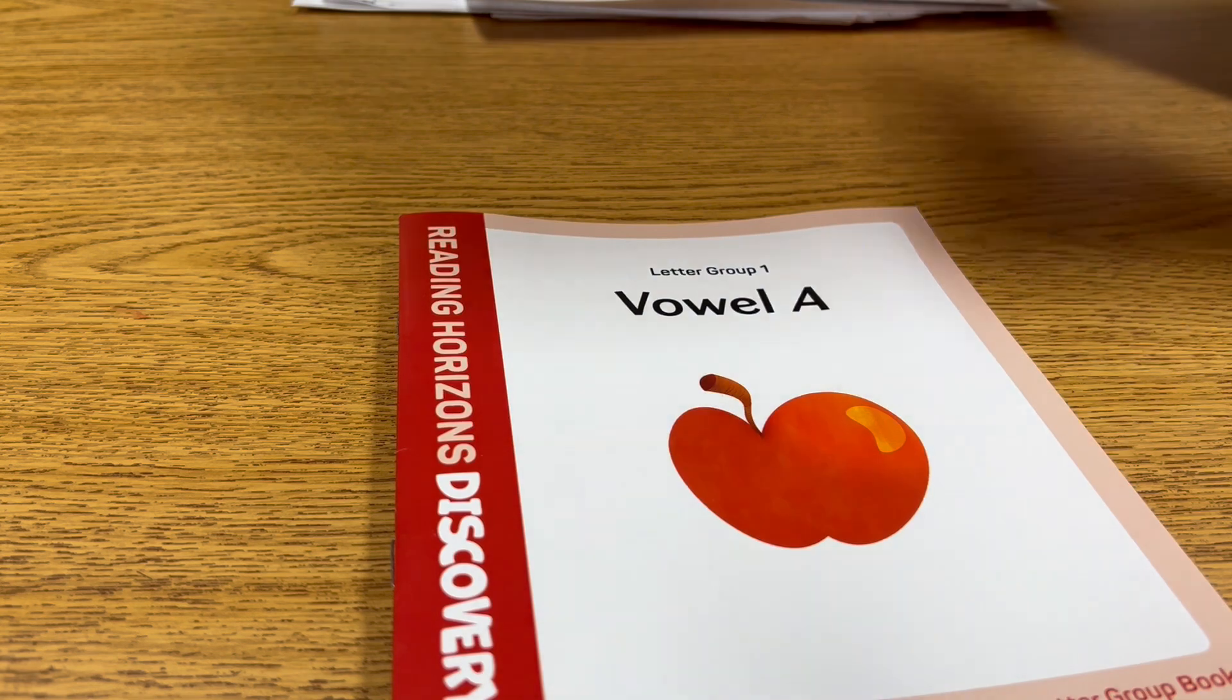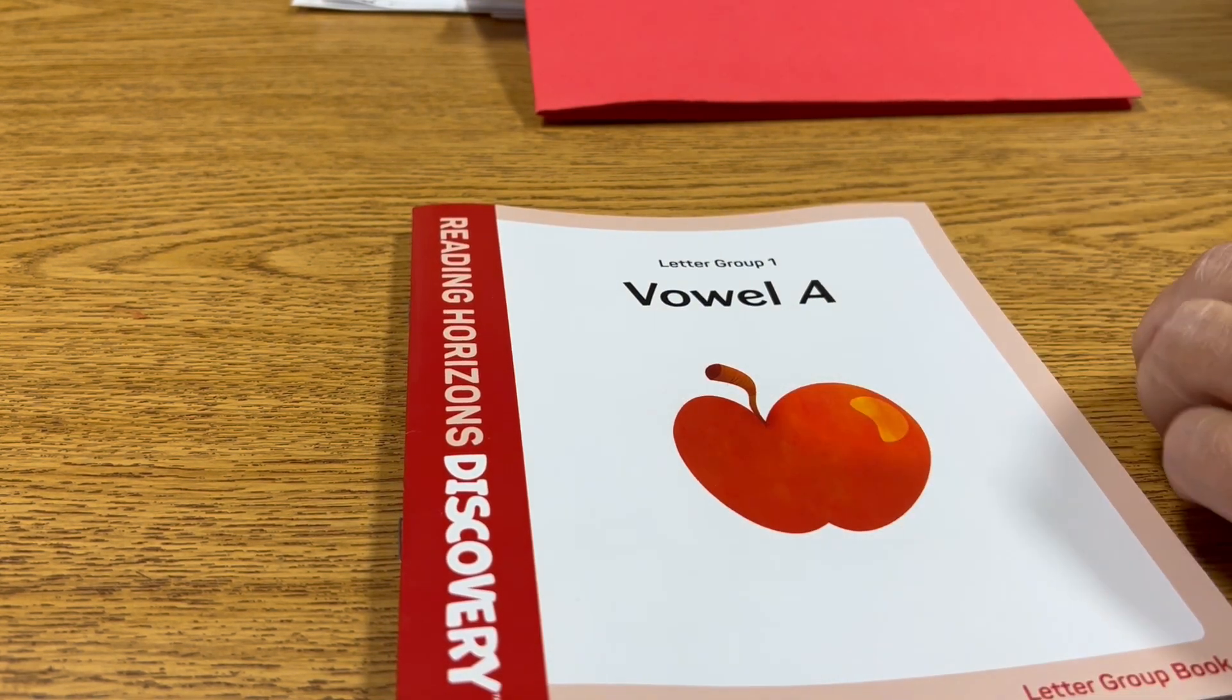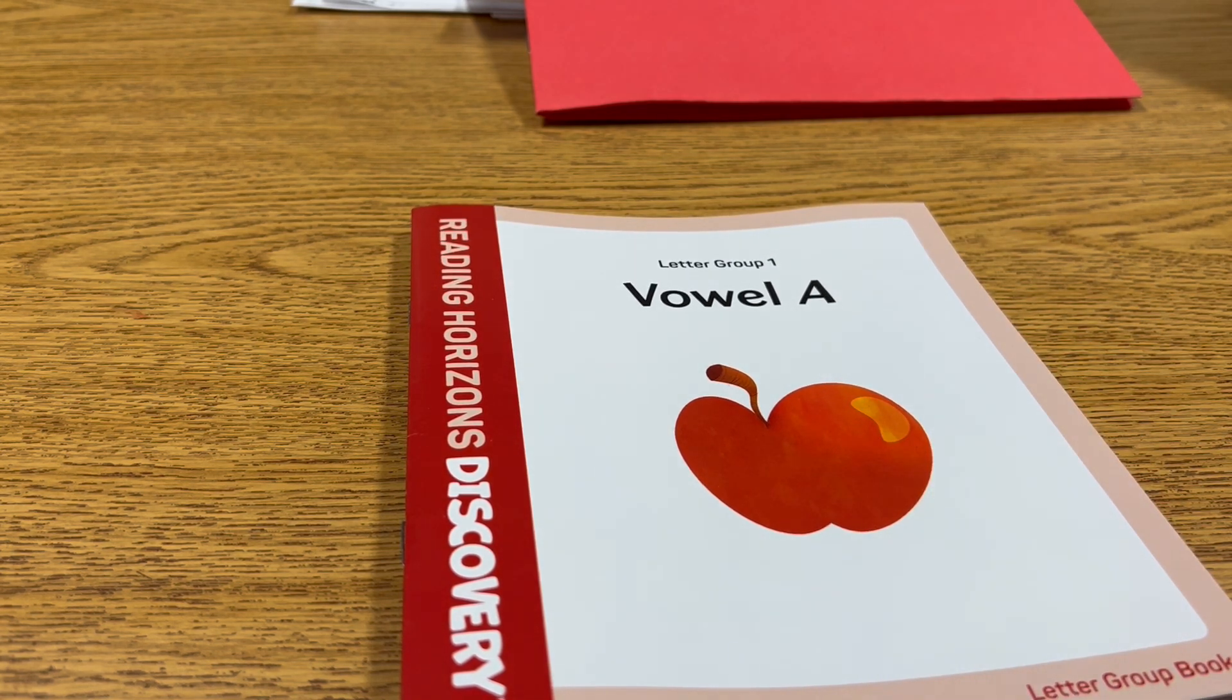Ooh, we'll write it on the log sheet later. Okay, so this is our book. It's called Vowel A. Ooh, we're going to talk about vowels, and we're going to talk about the letter A.